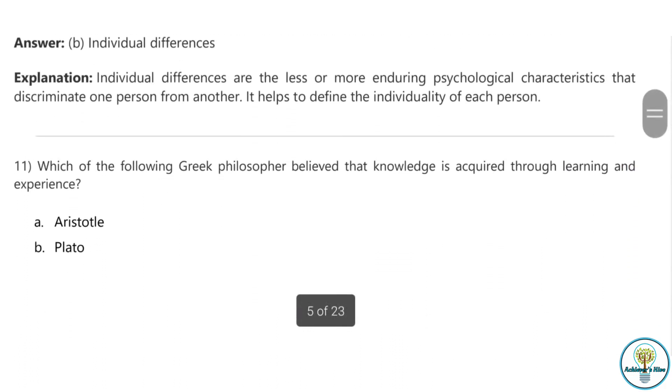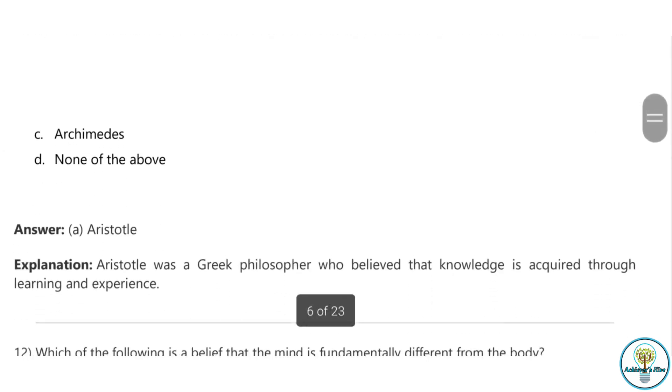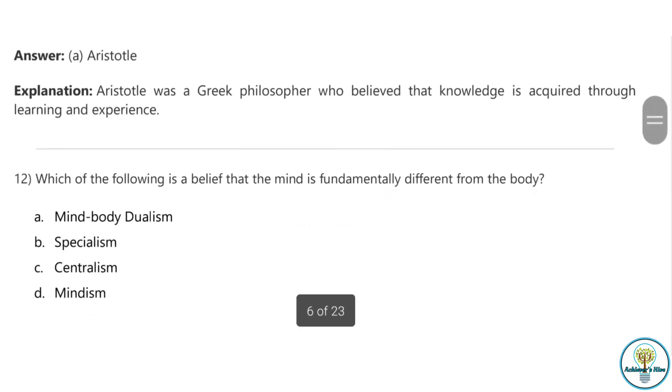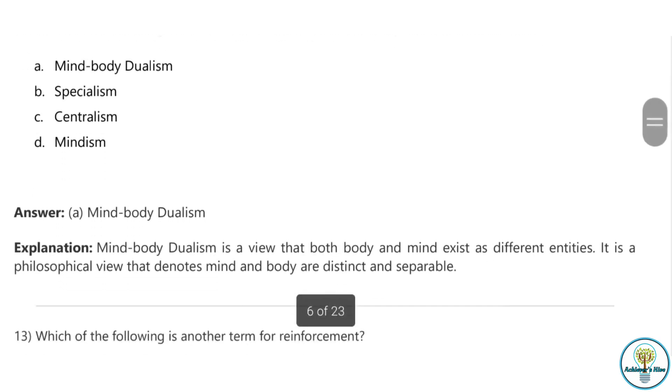Question eleven: Which of the following Greek philosopher believed that knowledge is acquired through learning and experience? Aristotle, Plato, Archimedes, or none of the above. Aristotle has to be the correct answer. He was a Greek philosopher who believed that knowledge is acquired through learning and experience. Question twelve: Which of the following is a belief that the mind is fundamentally different from the body? The correct answer is mind-body dualism. It's a view that both body and mind exist as different entities.